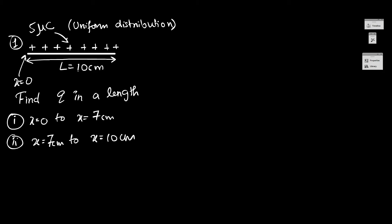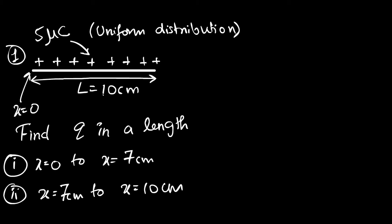Welcome back. We have an example on charge distribution. You can see a linear charge distribution — the charges are uniformly distributed. We have 5 microcoulombs distributed over a length of 10 centimeters, and we are asked to calculate how much charge we find in a length of 7 centimeters, from 0 to 7, and also in a length of 3 centimeters, from 7 to 10.